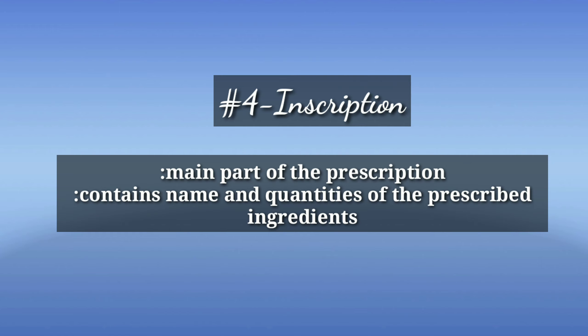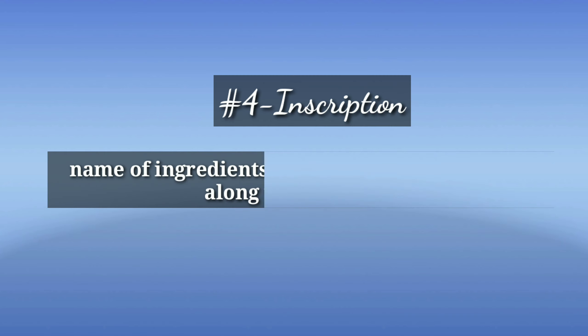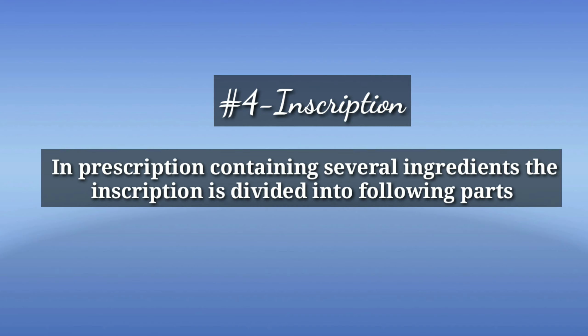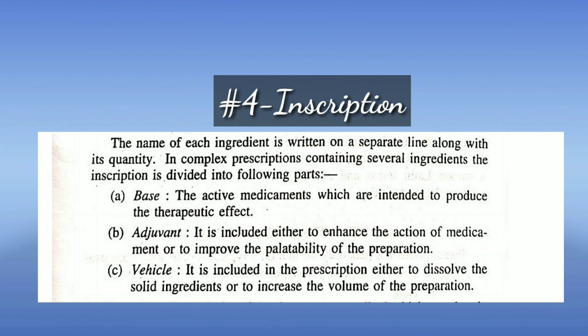Inscription is the main part of the prescription, which contains the name and quantities of the prescribed ingredients. The name of each ingredient is written on a separate line along with its quantity. In complex prescriptions containing several ingredients, the inscription is divided into three parts: base, adjuvant, and vehicle. Base is the active medicament intended to produce the therapeutic effect. Adjuvant is included to enhance the action of the medicament or to improve the palatability of the preparation.